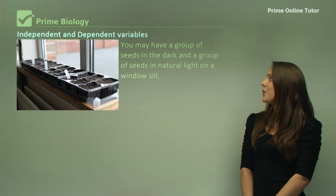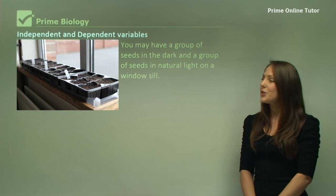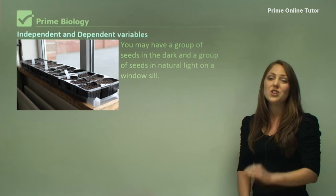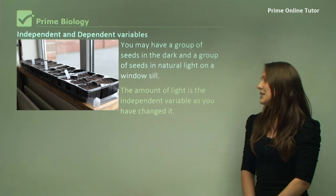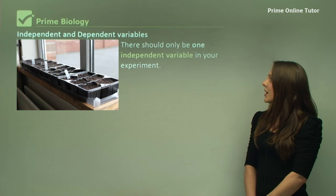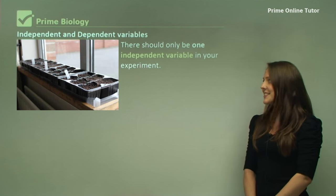You may have a group of seeds in dark, and a group of seeds in natural light on the windowsill. And here I've got a picture of just seeds on the windowsill. The amount of light is the independent variable. There should only be one independent variable in every experiment that must be consistent.